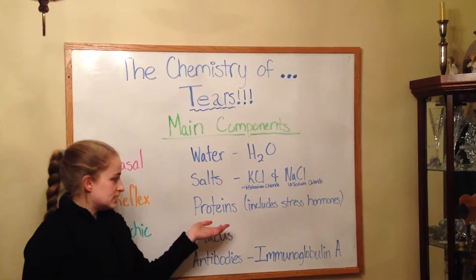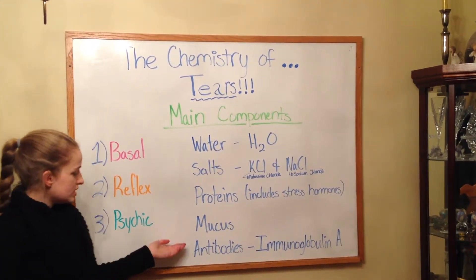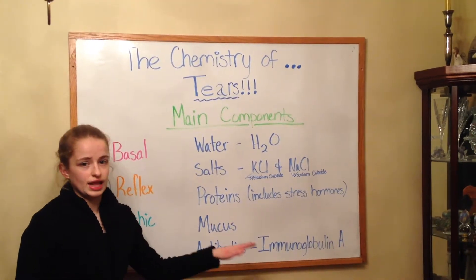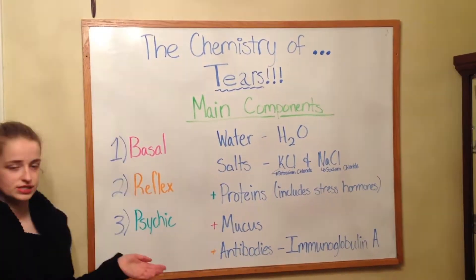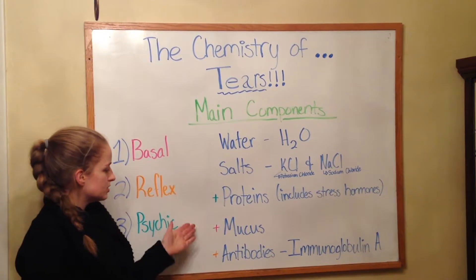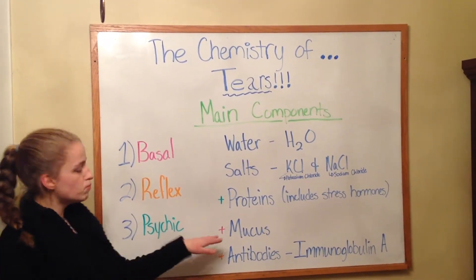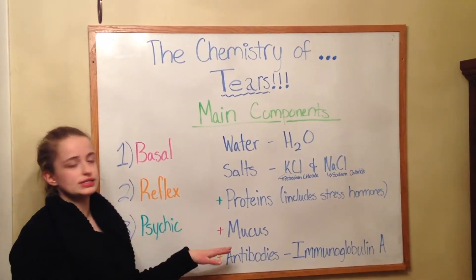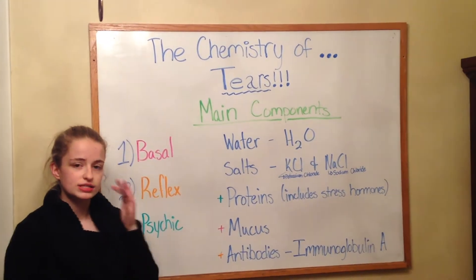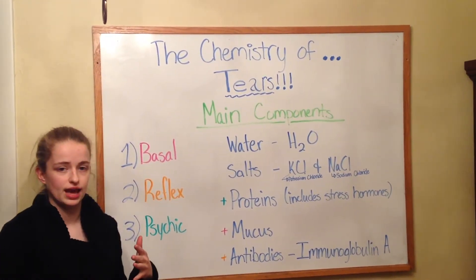Then we have proteins, including stress hormones, mucus, and antibodies — especially immunoglobulin A. Basal tears have the same water, salts, proteins, mucus, and antibodies, but they have more mucus than the other types of tears to help adhere the tears to the eye so that they stay there to help protect the eye.